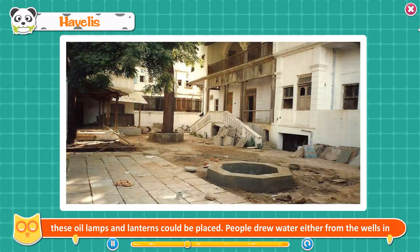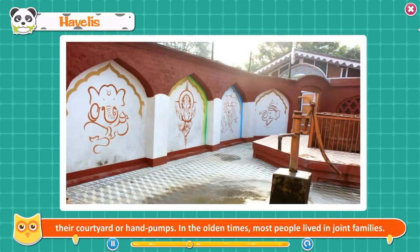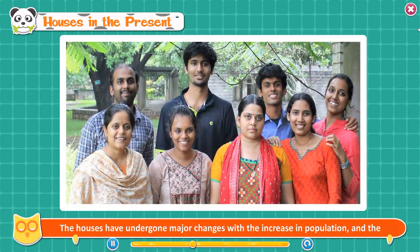The houses had huge courtyards and spacious rooms. The kitchen used to be smoky and full of soot because they used cow dung cakes or firewood as fuel. People used oil lamps and lanterns to light their houses since there was no electricity. All the walls had special places where oil lamps could be placed. People drew water from wells in their courtyard or hand pumps. In the olden times, most people lived in joint families.